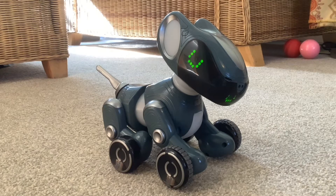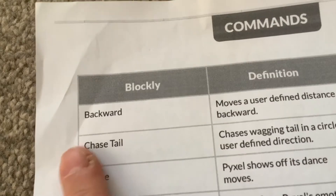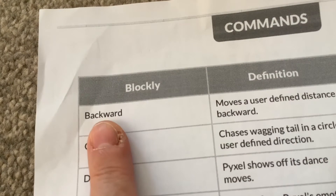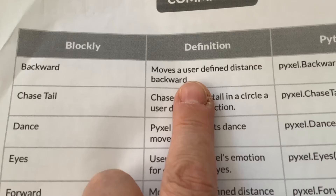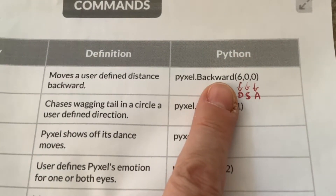Hi folks, welcome to another video on Pixel. In this video I'm going to look at the commands. The first command is backward — Pixel moves a user-defined distance backward — and we've got the Python code here.